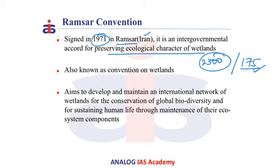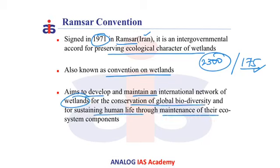These are declared of international importance. This convention is also called the Convention on Wetlands. Through this convention, it aims to develop and maintain an international network of wetlands for the conservation of global biodiversity and for sustaining human life through maintenance of their ecological system components.